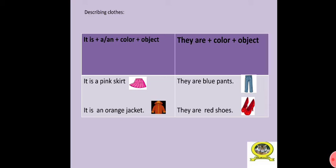They are plus the color plus object. A or N comes before the singular objects. Number one, they are blue pants. They are blue pants. I don't say they are pants blue. Number two, they are red shoes.